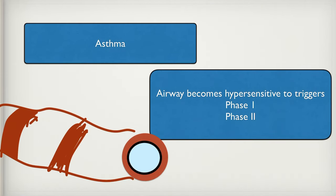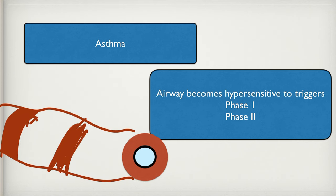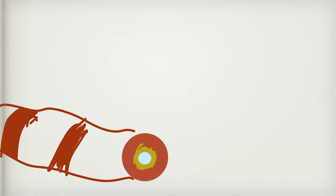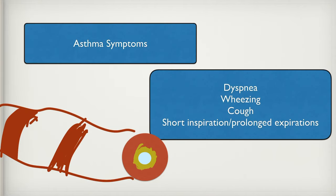Asthma — lots of things can cause it: exercise, cold, pollen, dander, pets. We call these triggers. One big trigger we think is environmental pollution because we see a lot more asthma in cities than in the country. When someone gets exposed to a trigger, their body thinks it's something harmful, so it causes bronchial constriction and produces more mucus to try to trap whatever the person is inhaling — that's phase one. They're going to have wheezing and a cough.